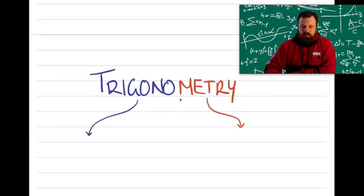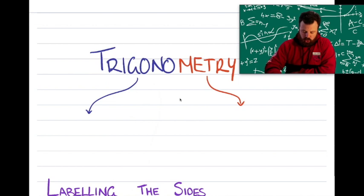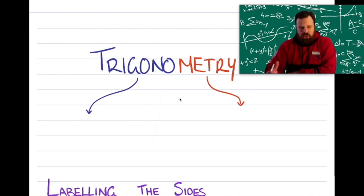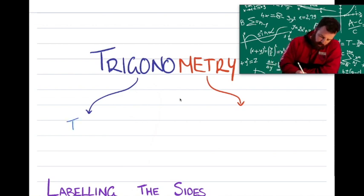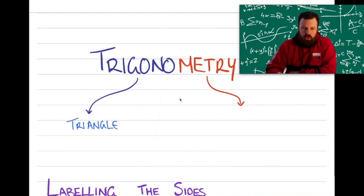Trigonometry. Let's get rocking and rolling with trigonometry. So the word trigonometry comes from ancient Greece, and the word trigon means a three-angled shape, and a three-angled shape we know as a triangle. Tri meaning three angles. So the word trigon is just an ancient Greek word for triangle.